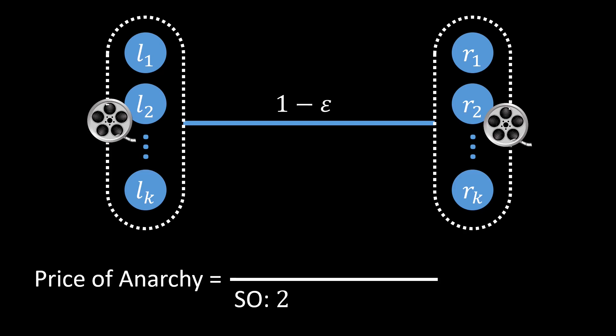Note that this social optimum is not a Nash equilibrium. Node R2, for instance, is not happy about caching the movie, because node R2 can fetch the movie from node L2 for a cost of 1 minus epsilon, which is strictly less than the cost of 1 when caching the movie itself. In fact, the only Nash equilibrium in this situation is a single node, in either city, caching the movie. But this cost is much larger than the social optimum — and this is exactly what we want, so that the price of anarchy becomes large.